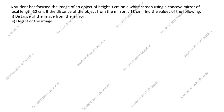Find the values of the following: first, distance of the image from the mirror; second, height of the image. What is given in this question? A student has focused the image of an object of height 3 centimeter. The height of the object, ho, is equal to 3 centimeter.